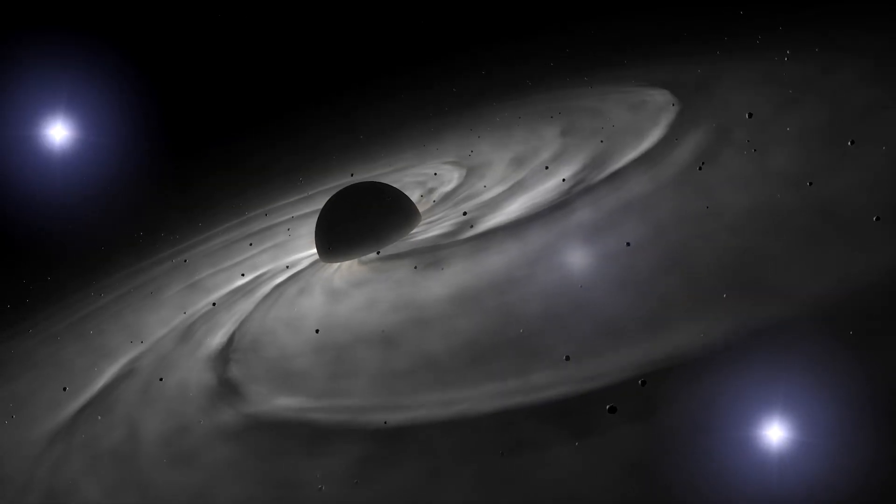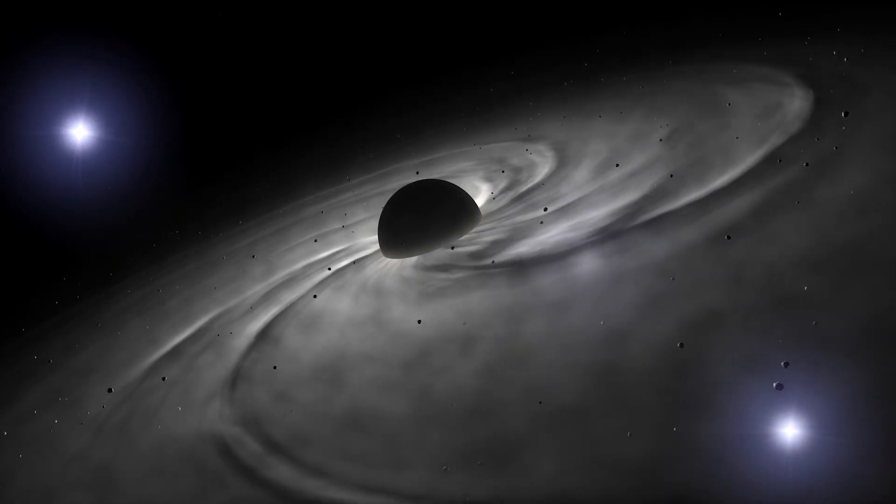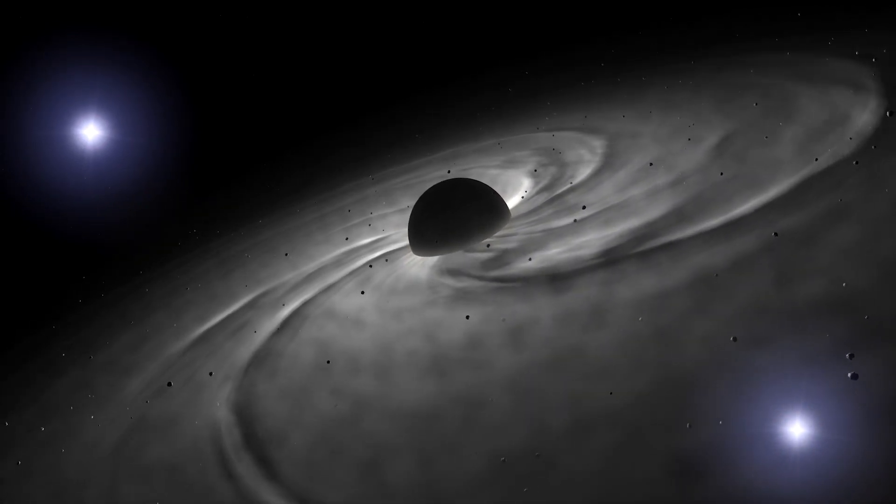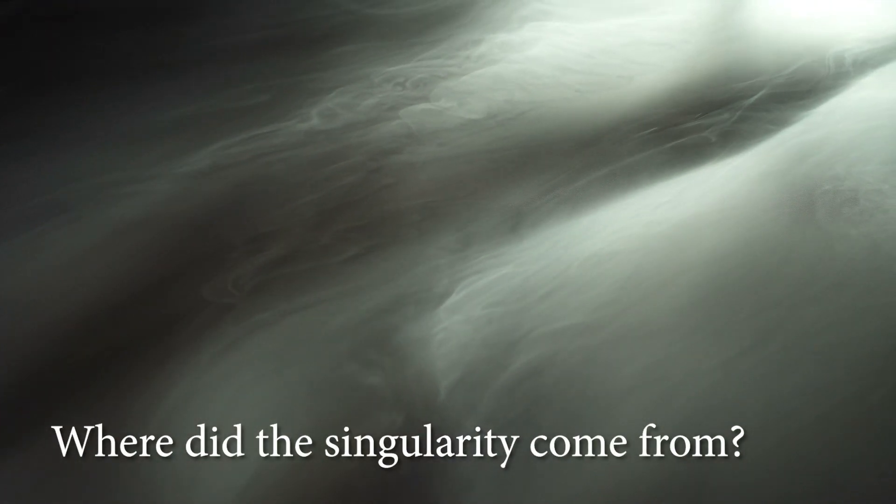The Big Bang model states that before Big Bang, the universe was infinitely dense, stuffed into a point we call a singularity. So where did the singularity come from?